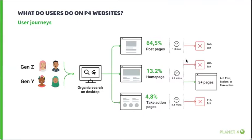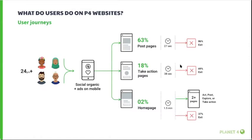Users who start their session at take action pages have high exit rates with low session duration. On the other hand, those who land on the home page do convert — they spend more time on the page and visit at least three more pages in their journey, such as act, explore, or take action pages, meaning they are more likely to discover content. The second journey identified is users above 24 years old coming from social media and ads on mobile devices, also landing on the most visited pages with a similar pattern but spending less time with higher exit rates.